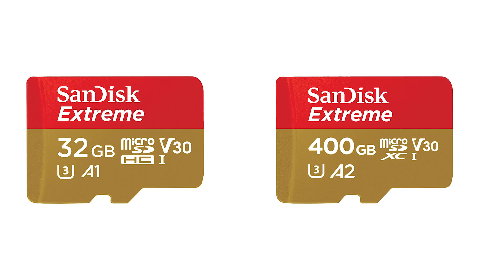They've also started introducing the A system. At the moment there are two classifications: A1 and A2. This refers to the application performance class specification — it's basically talking about input/output rates and it refers to mobile phones and the use of SD cards in mobile phones. So for us photographers, this really isn't relevant at the moment. If our cameras start using more applications it might become relevant, but for now you can ignore the A class.